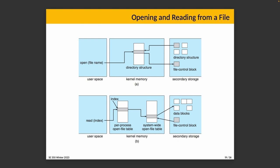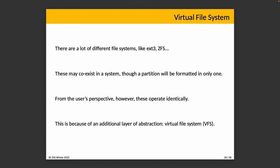There are a lot of different file systems — EXT3, ZFS — and they can coexist in a system. For example, a laptop's main built-in drive might be formatted APFS while the Time Machine backup drive is formatted HFS Plus. They're two different disks so it's fine to have them formatted differently.